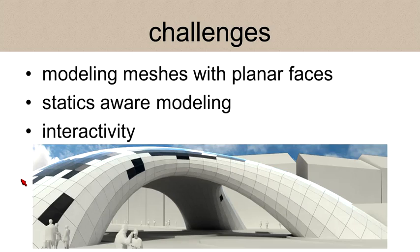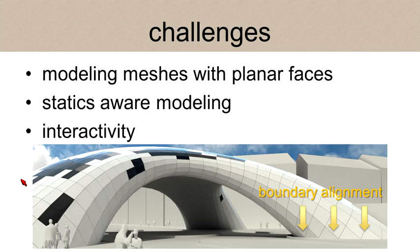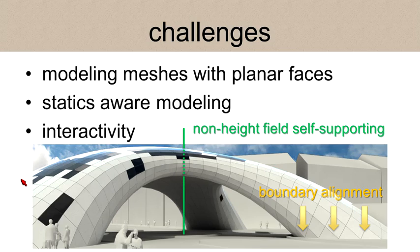If possible, we would like a framework flexible enough to accommodate more user-prescribed constraints such as boundary alignment or to match given combinatorics with user-prescribed boundaries. An even more challenging task is creating structures that haven't been demonstrated before in computational design, such as this self-supporting structure that is not a height field. If you view it from above, there are overlaps along the z direction.